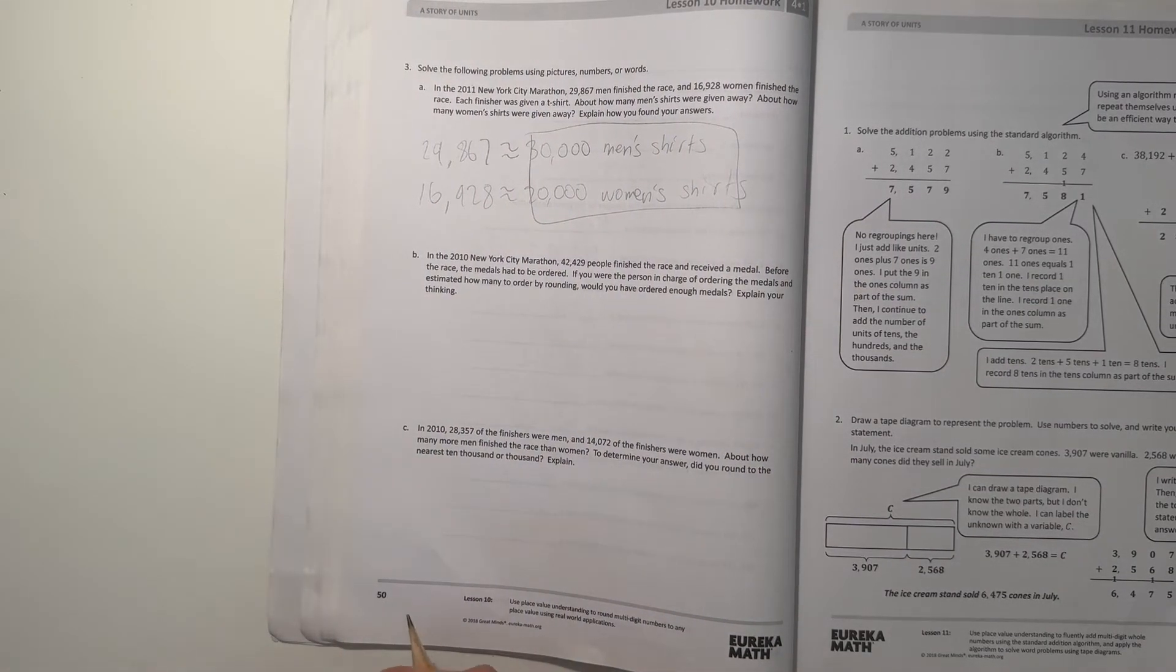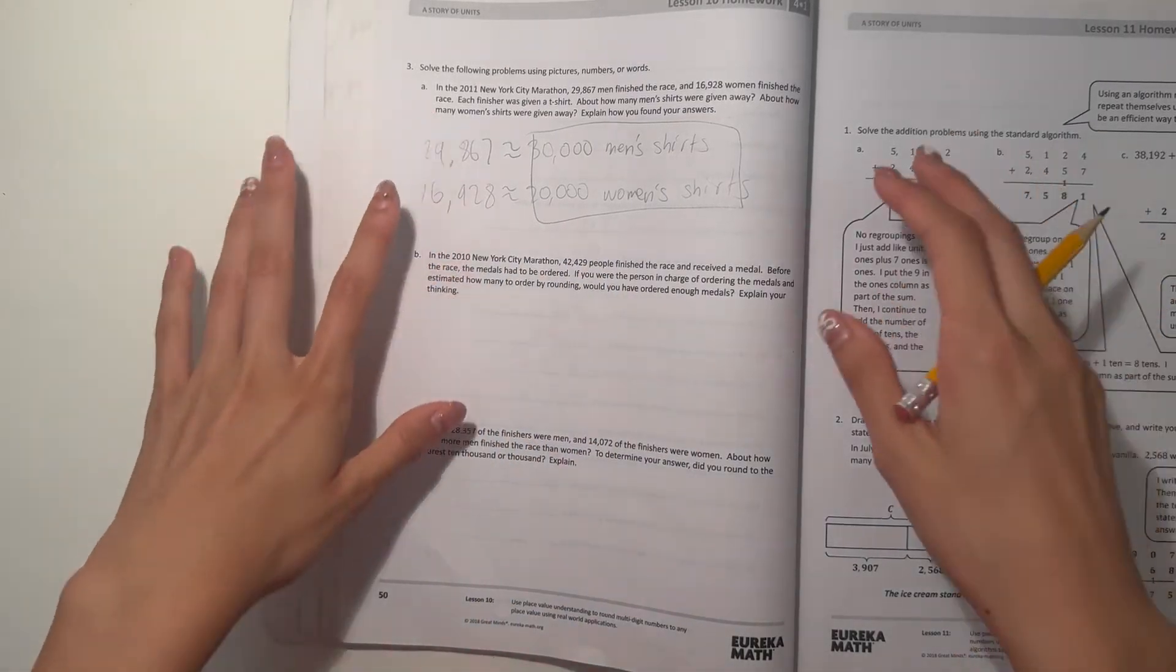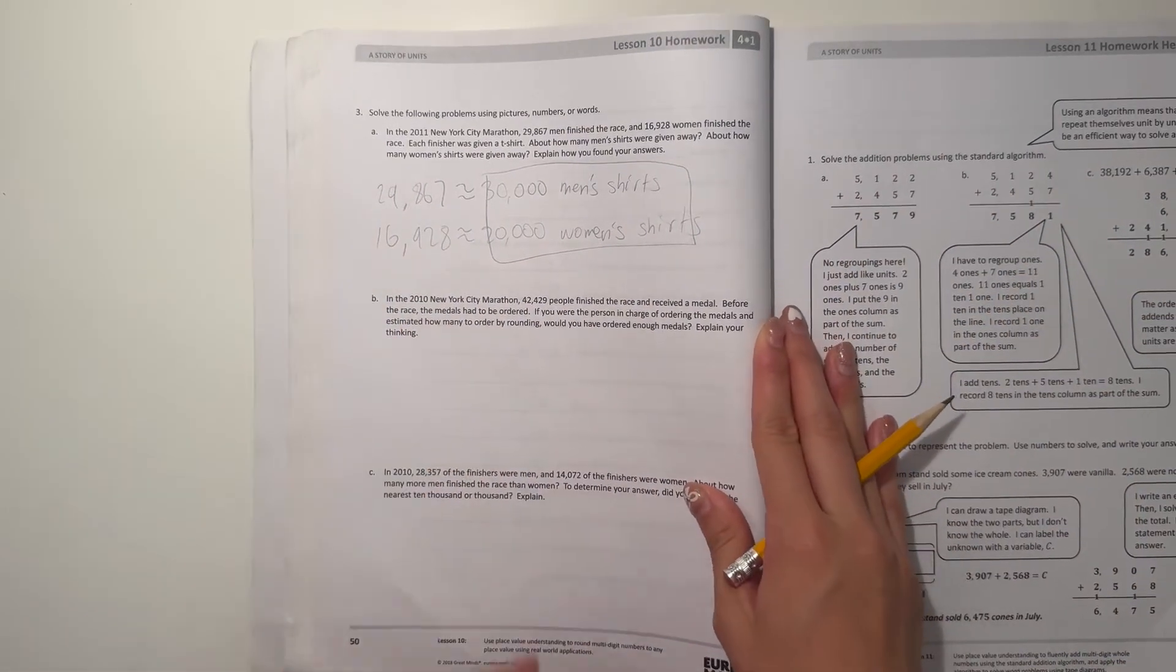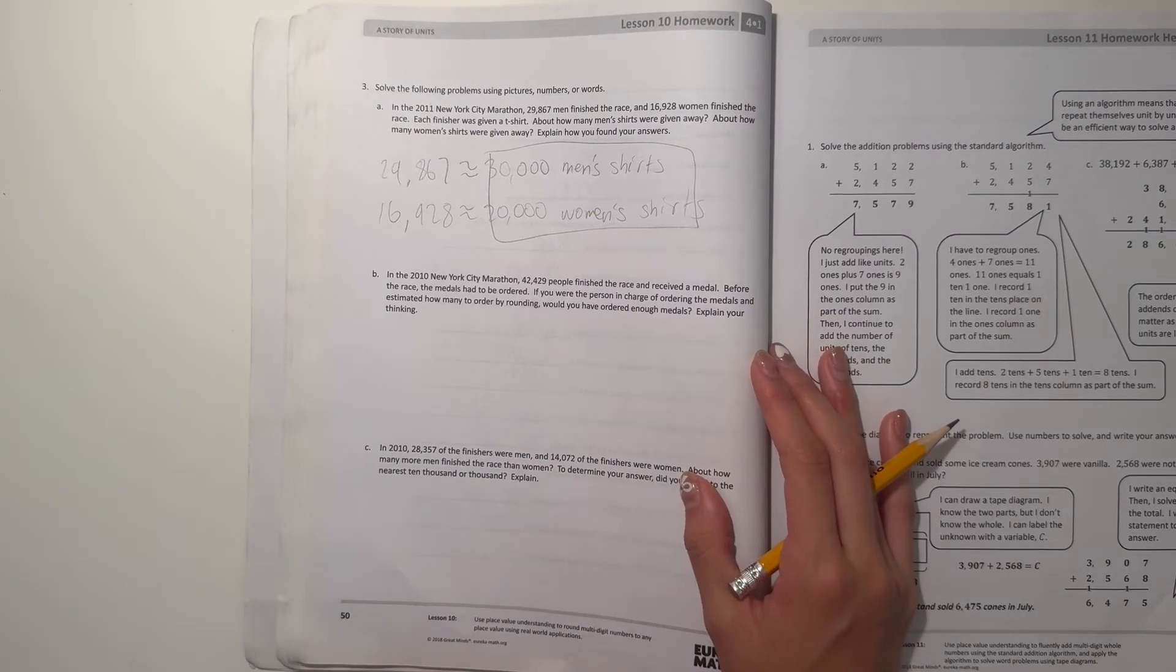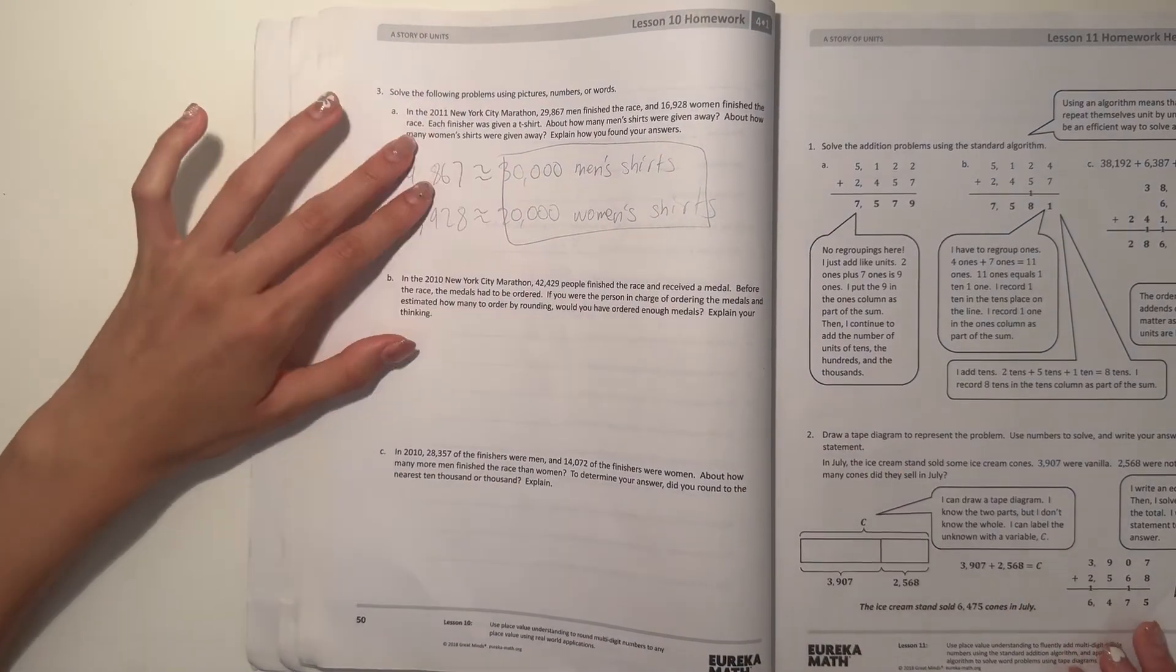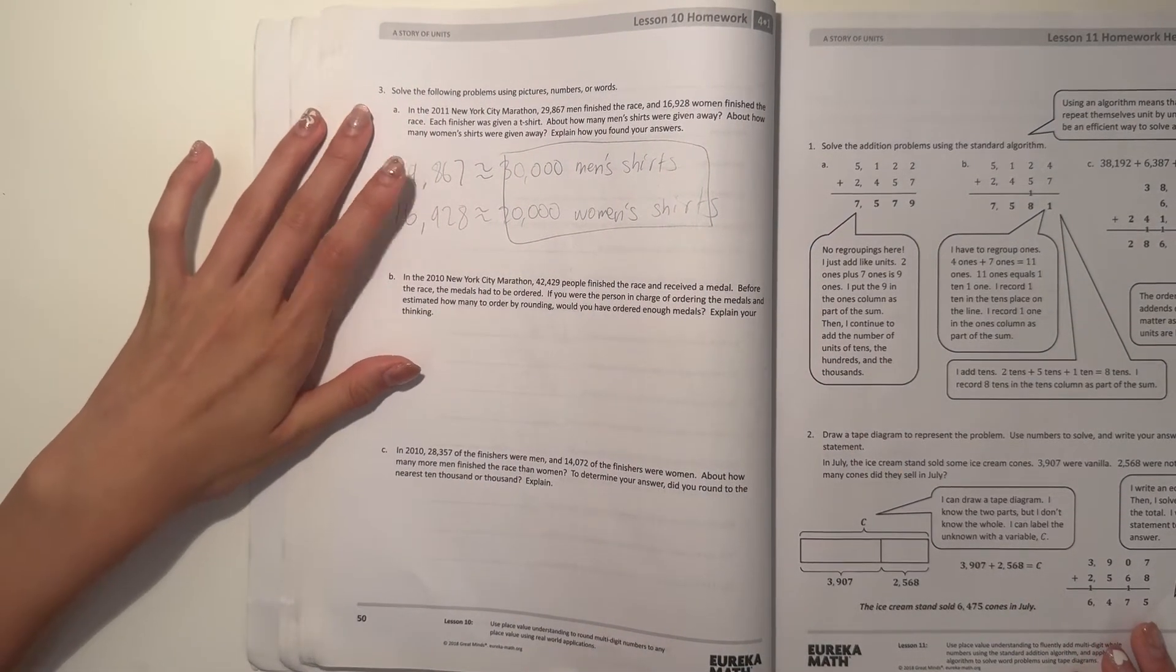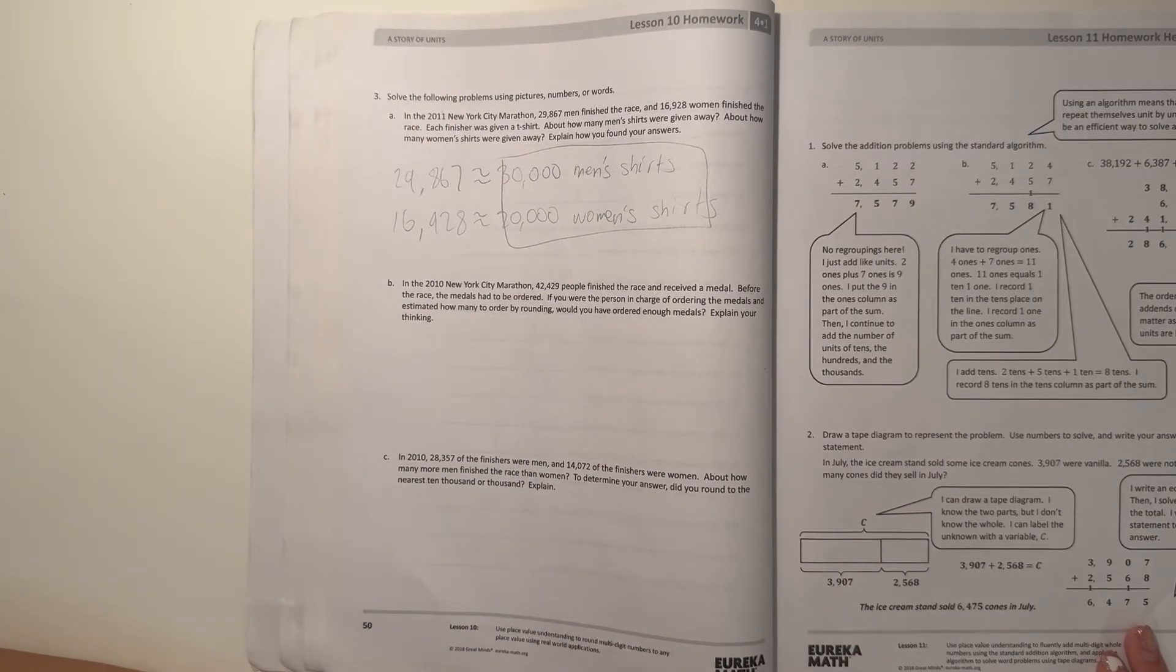And how do we find our answers? Well, this one we're rounding up and this one we're also rounding up. We basically just round the two numbers up by 10,000 to find these two numbers which are our answers. So that's how we found our answer.